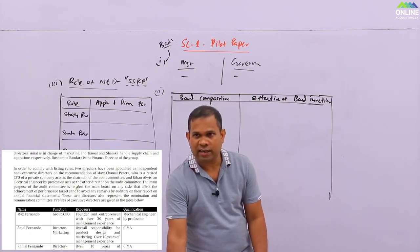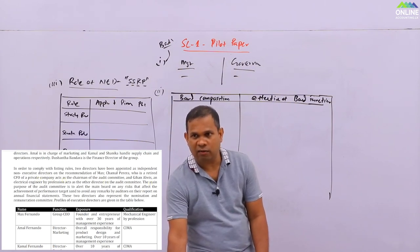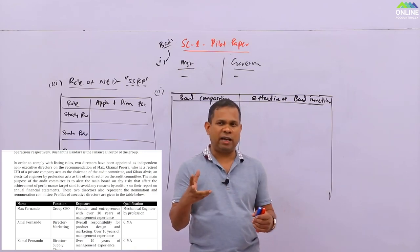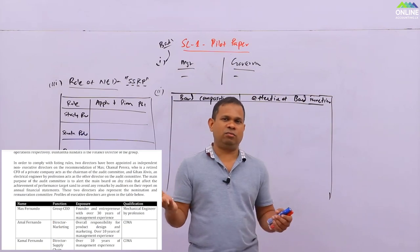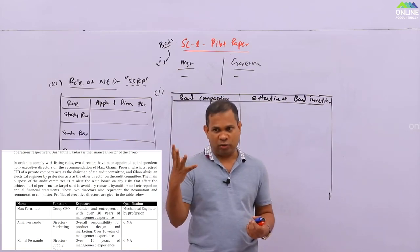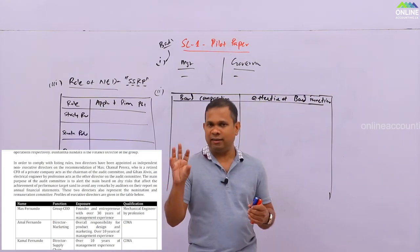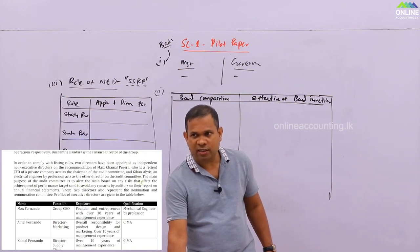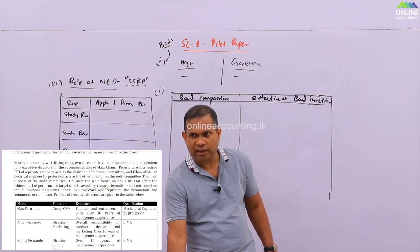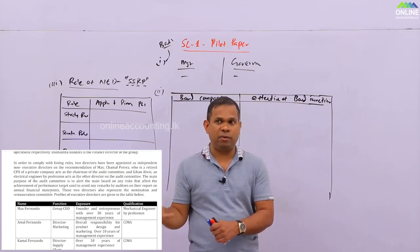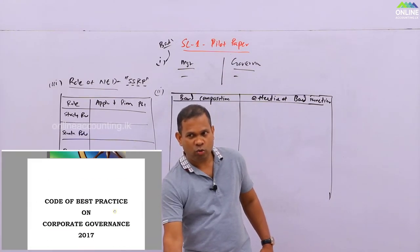Two directors have been appointed as independent non-executive directors on the recommendation of Max, but he shouldn't be recommending them — the nomination committee should do that. Chamal, a retired CFO of a private company, acts as chairman of the audit committee, and Gihan Alwis, an electrical engineer, acts as the other director. The audit committee lacks financial acumen and may also lack independence since both were recommended by Max. The main purpose of the audit committee is stated very narrowly, but in reality the audit committee has a much larger role, as detailed in the audit committee charter in the Code of Best Practice on Corporate Governance.